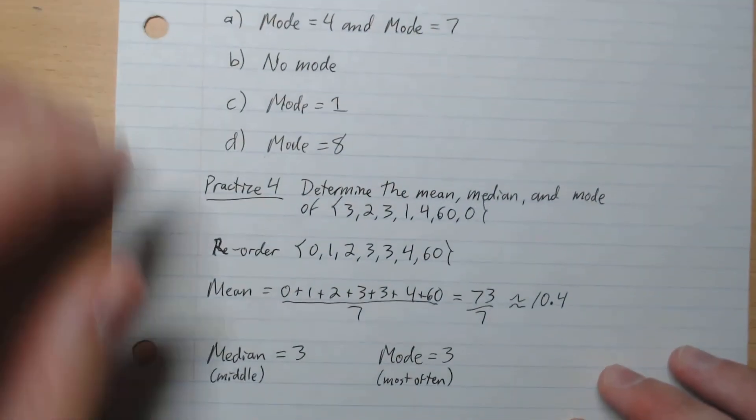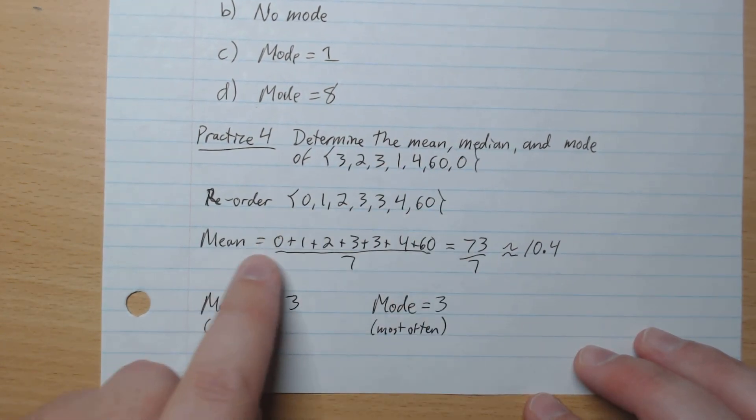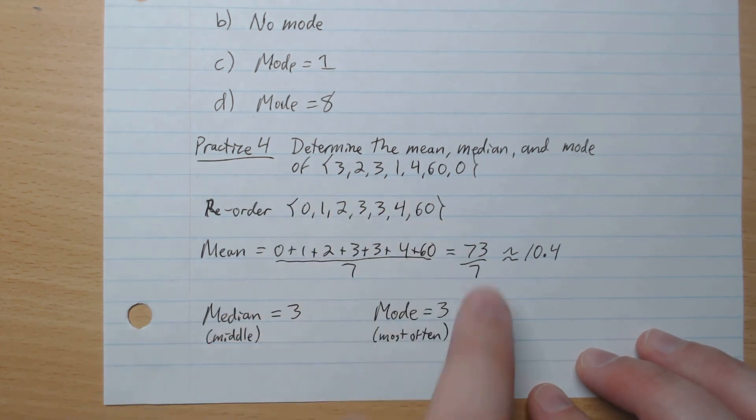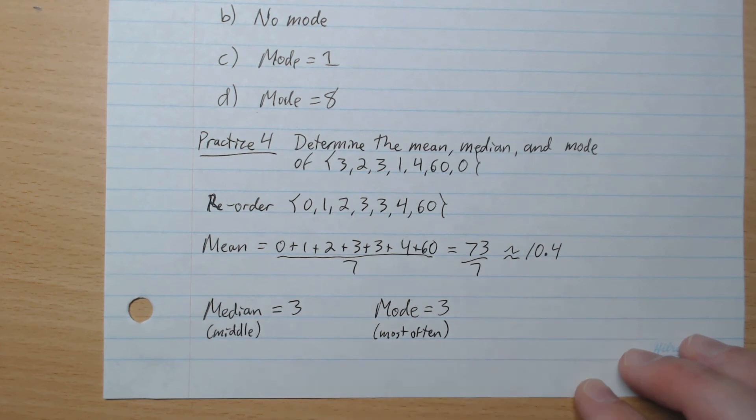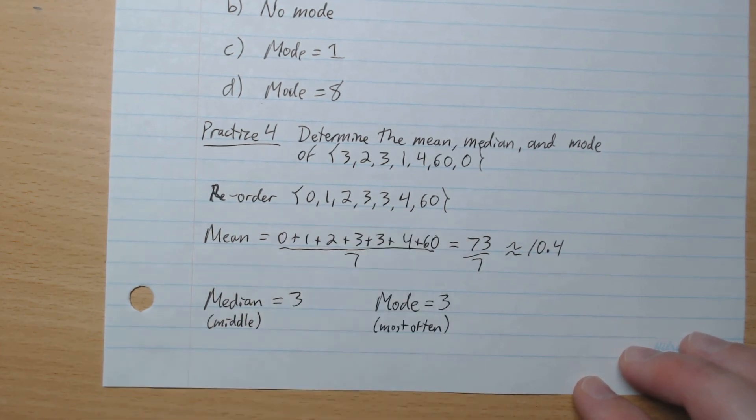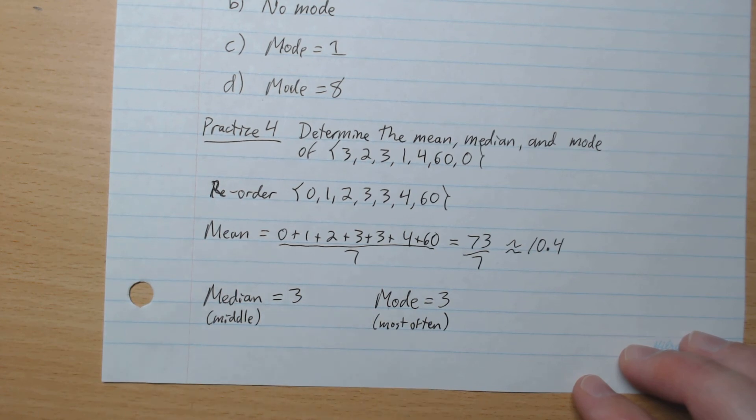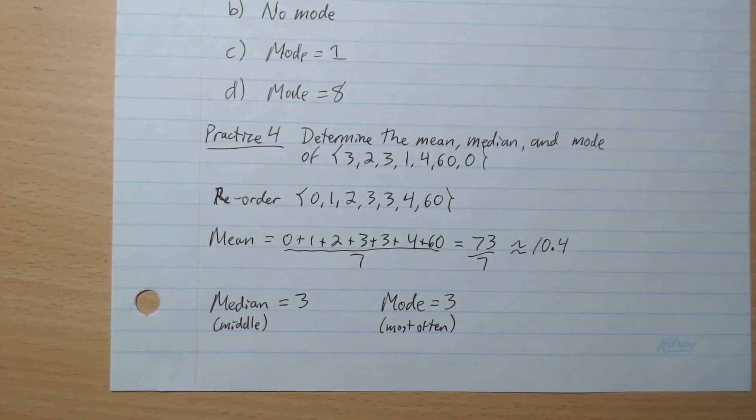Okay, we're back. So the first thing is to reorder it, because it's not in order. Now that it's in order, we'll calculate the mean, add it up, and there's 7 of them. So 73 divided by 7 gives about 10.4. Median, middle, what's in the middle? 3, like that. And mode, what happens most often, is 3, like that. And that's it, it's that easy. I'll see you guys in the next video.